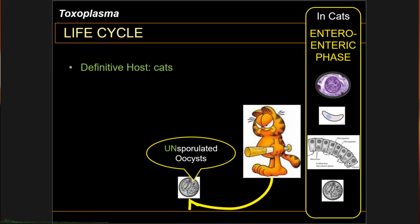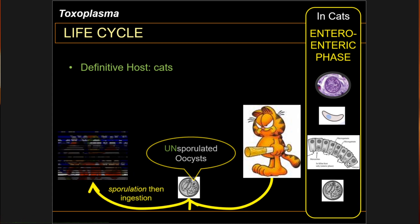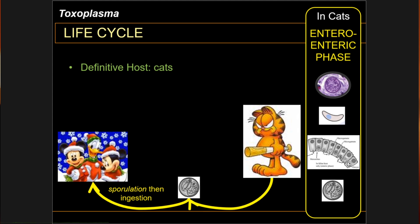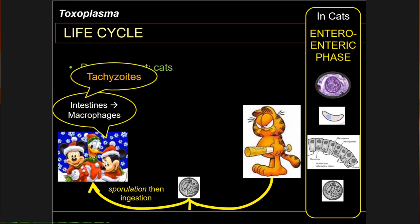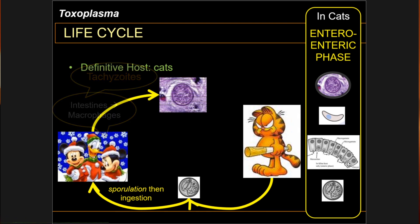Unsporulated oocysts need 1 to 5 days for sporulation in the environment, after which they are picked up by intermediate hosts such as farm animals, usually mice or rats. Oocysts release sporozoites and penetrate the intestinal cells of these smaller animals. These sporozoites get ingested by macrophages in the gastrointestinal tract, where they change into a specialized form called tachyzoites. Tachyzoites are notorious for multiplying rapidly inside the macrophages. As the infected macrophages float around in the body of the intermediate host, they eventually end up in some organs, commonly the brain and muscle tissue.